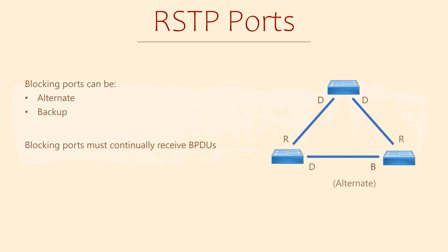As I just mentioned, blocking ports can be alternate or backup. An alternate port is one that has received a superior BPDU from a different switch in the same network segment. The network segment in this case is just that link between the two switches. This is an alternate port, as it is an alternate path to the root bridge. It's ready to take over if the current root port fails.